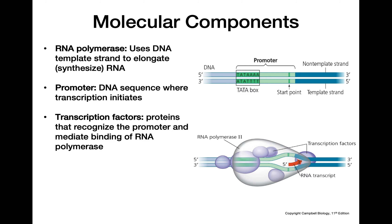Next we have our transcription factors, which are the purple circle structures shown in this picture. Transcription factors are proteins that also recognize the promoter, and they help RNA polymerase actually bind to that promoter and start the process of transcription.